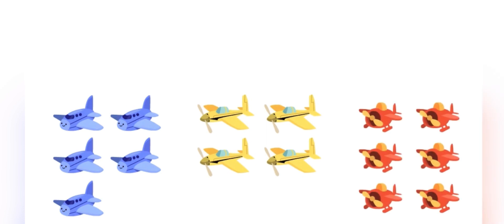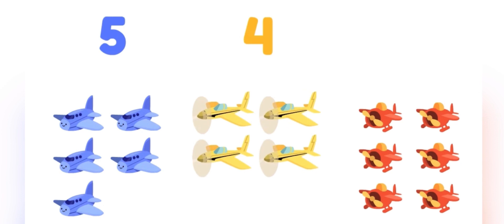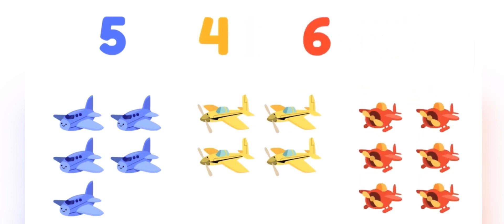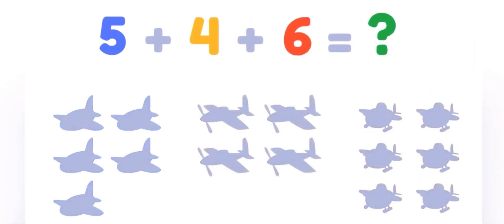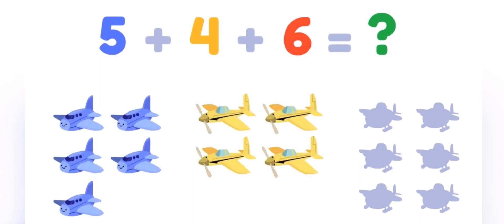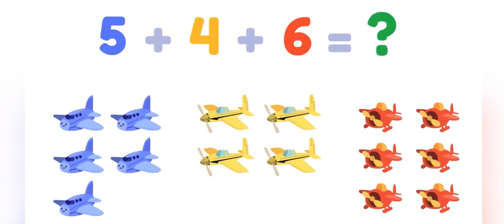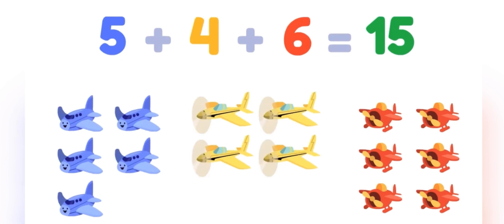Let's count my plane collection! There are five blue planes, four yellow planes, and six red planes. How many are there together? Five plus four plus six equals fifteen planes total! My collection rules!